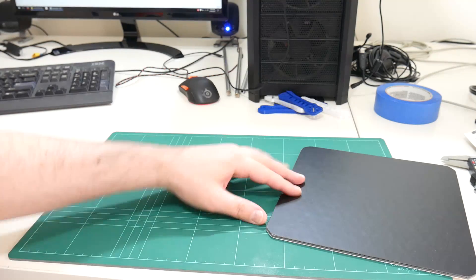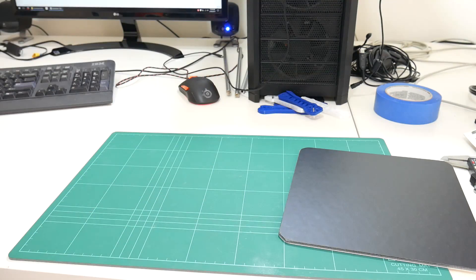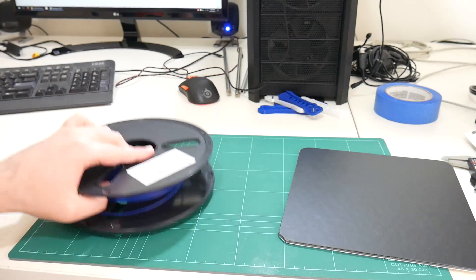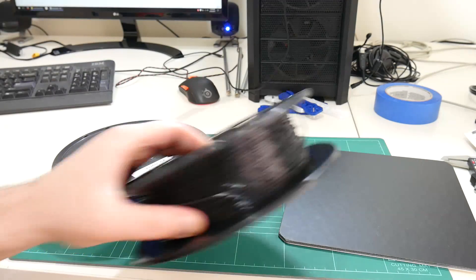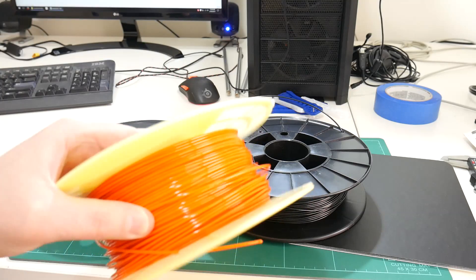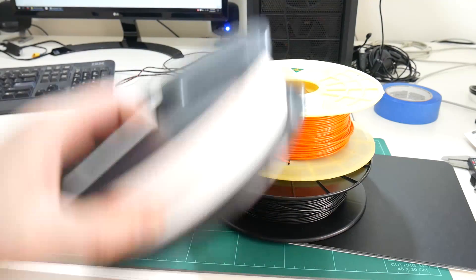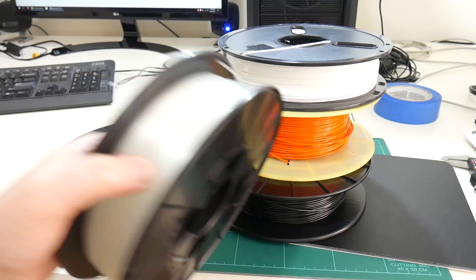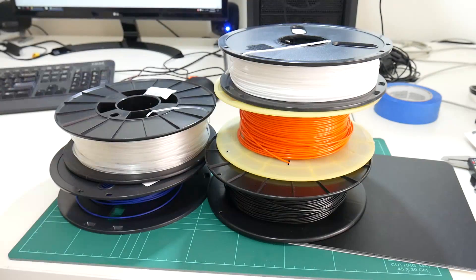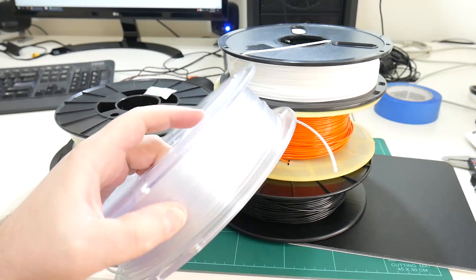To test if this PrintinZ build plate is really that good, today I'll be testing PLA, ABS, PETG, Flexible, Nylon, and the hardest of the lot, Polycarbonate.